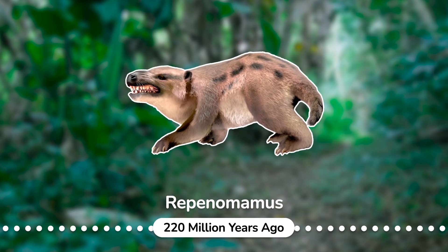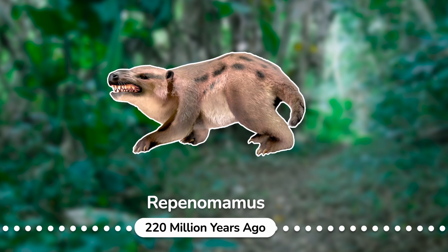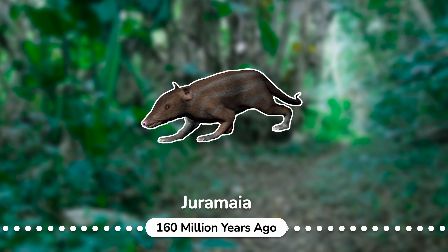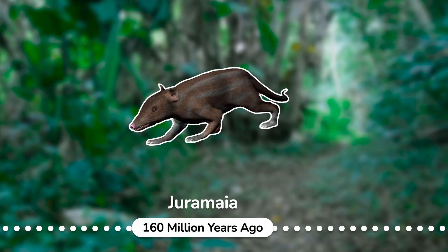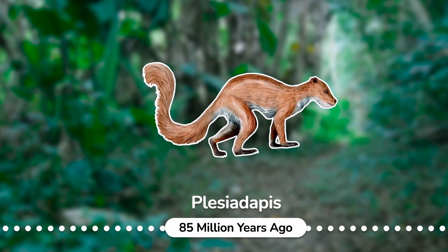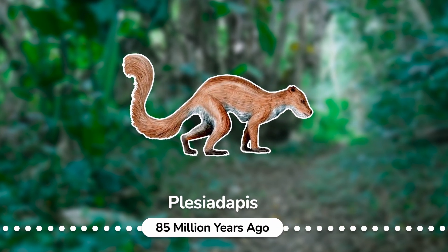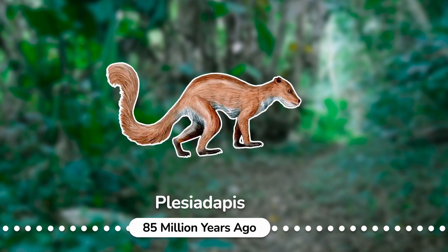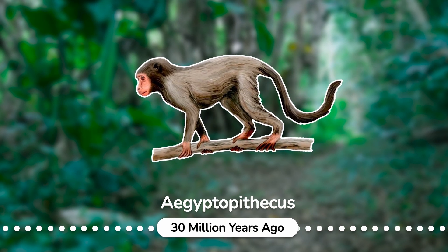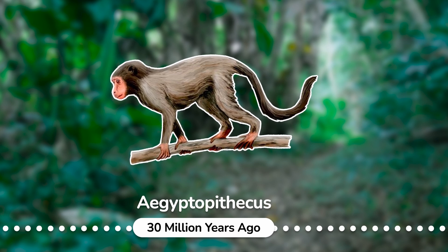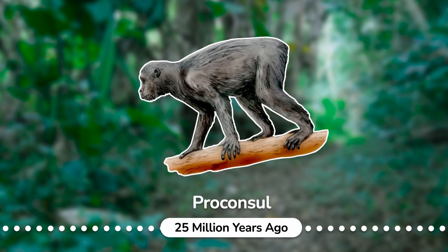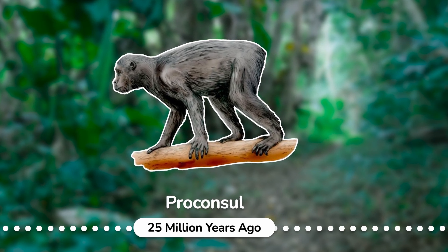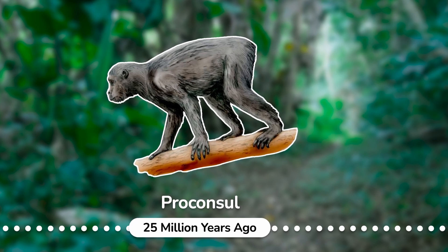Repenomamus: a genus of opossum- to badger-sized gobiconodontid; fossils were found in China. Juramaia: an extinct genus of very basal eutherian mammal known from the late Jurassic deposits of western Liaoning, China. Plesiadapis: one of the oldest known primate-like mammal genera; Plesiadapis tricuspidens — the type specimen is named after the three cusps present on its upper incisors. Aegyptopithecus: an early fossil catarrhine that predates the divergence between hominoids and cercopithecids. Proconsul: an extinct genus of primates that existed from 25 million years ago during the Miocene epoch; fossil remains are present in eastern Africa, including Kenya and Uganda.